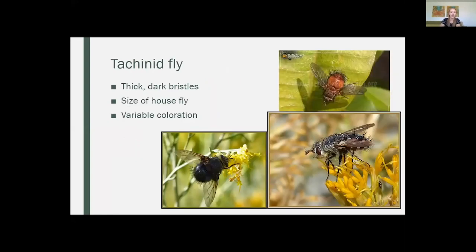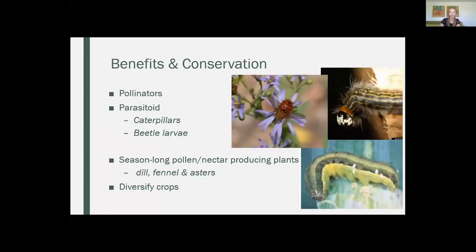Next up is our tachinid fly. You can tell them apart from some other flies because they have these really dark, thick bristles on their abdomen. They're about the same size as a house fly, and they can be fairly variable in coloration. There are about a thousand species of them in North America. We like these guys because they're pollinators — they have all those nice bristles to help catch and carry pollen. These guys are actually parasitoids, not predators. They will lay their eggs on or near caterpillars — they're what's called an endoparasitoid, laying their egg on the outside of the host, or even on food nearby, which is how they get into the host.